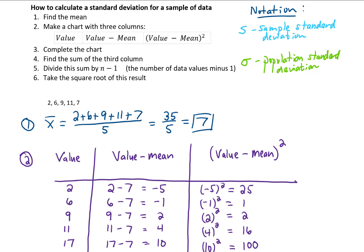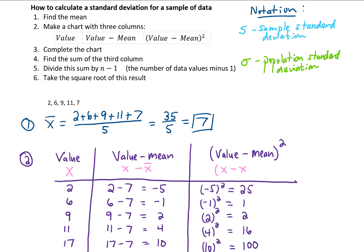Before moving on, here is a note on notation. Instead of writing out the whole word 'value' for the first column, we simply call it x. Instead of 'value minus mean' for the second column, we write x minus x-bar. And for the third column, we write (x minus x-bar) squared.